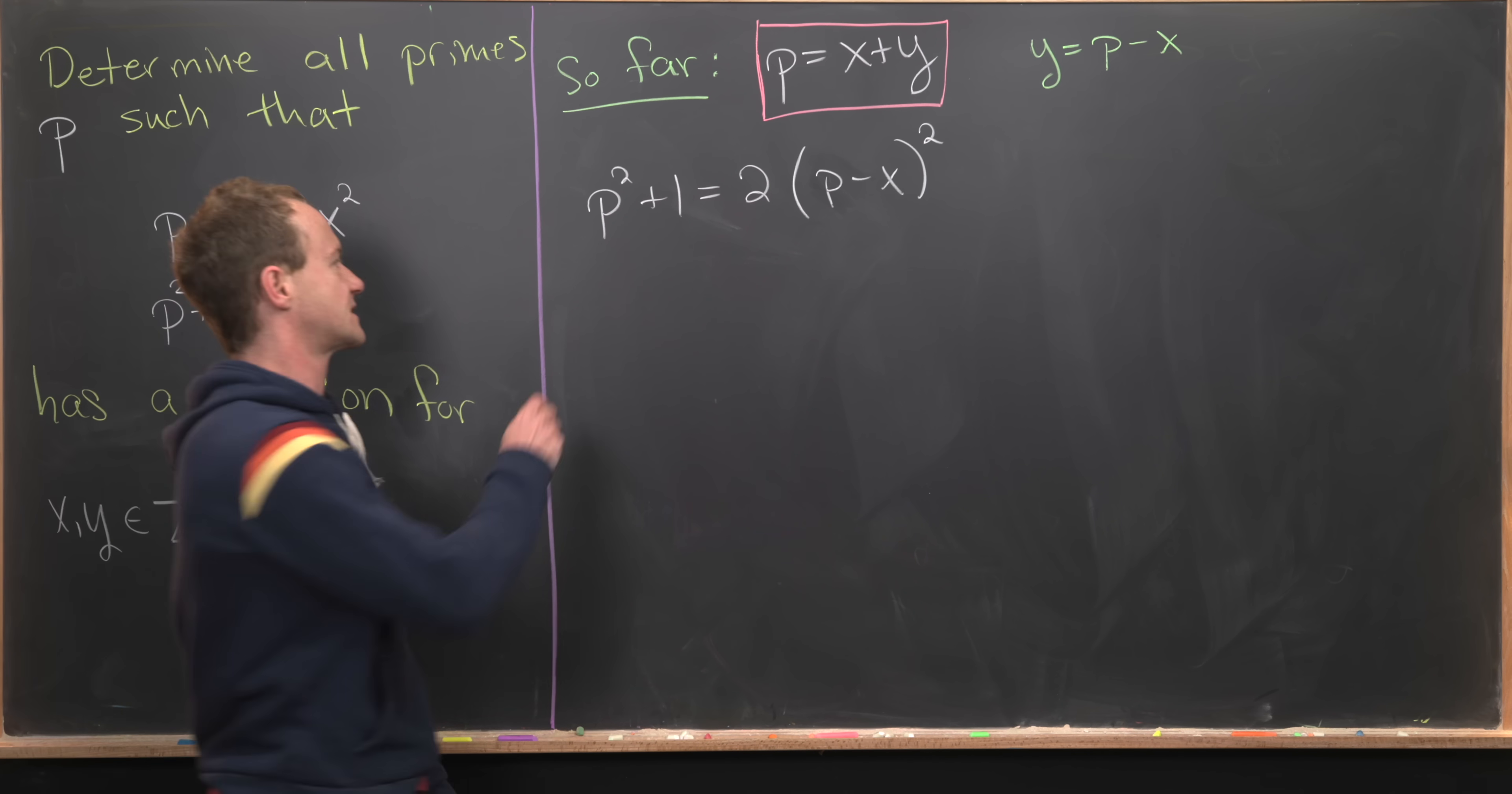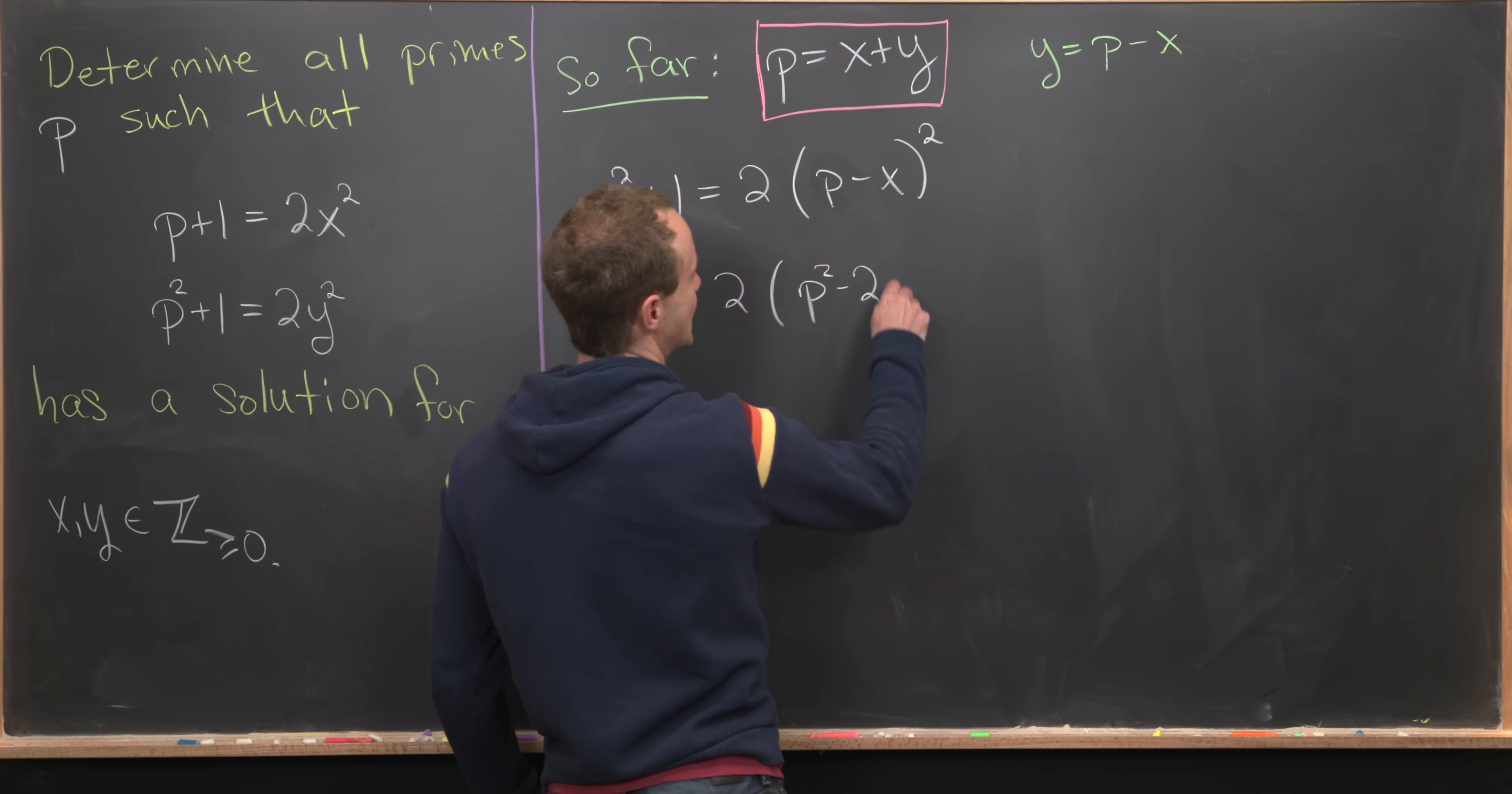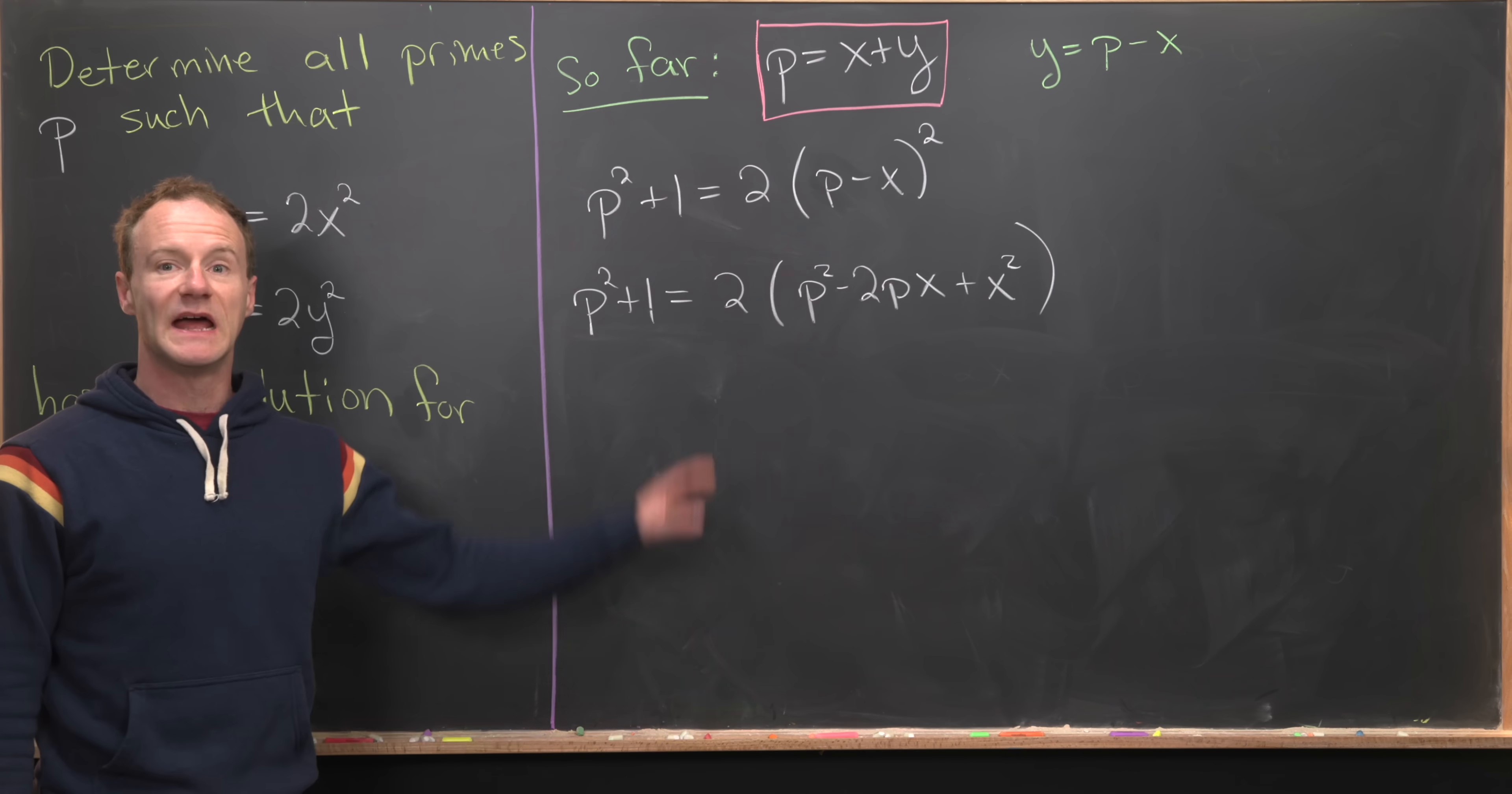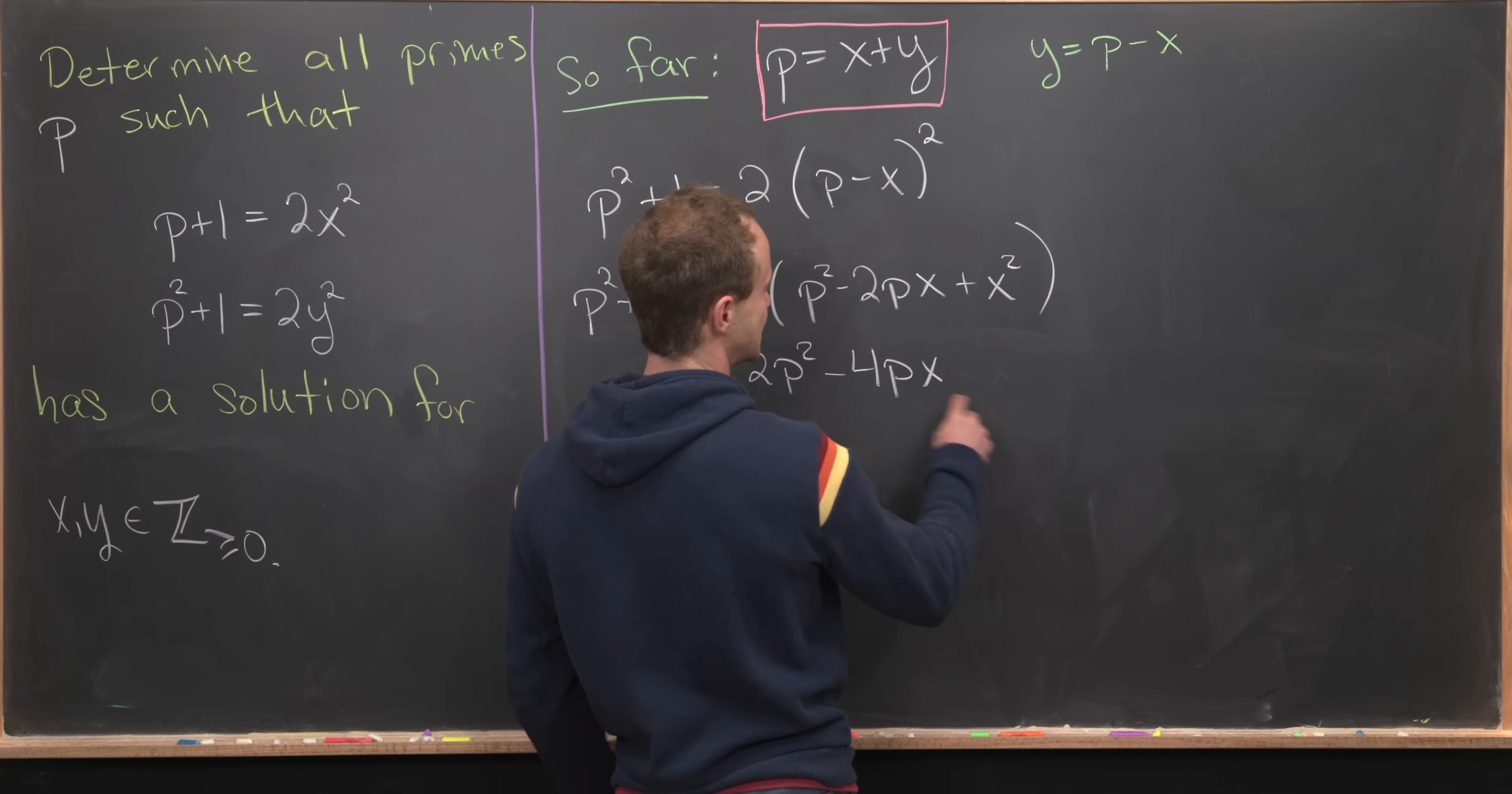Let's see what that gives us. We have p²+1 equals 2 times (p²−2px+x²). Multiplying the 2 through, we're left with 2p²−4px+2x².